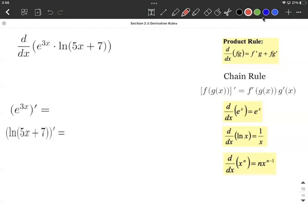All right, let's take a derivative. This is kind of a complicated-looking function here: e to the 3x multiplied by the natural log of 5x plus 7.